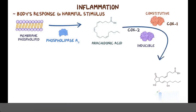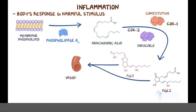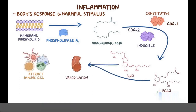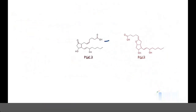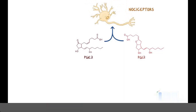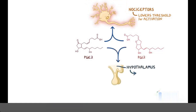Both enzymes produce prostaglandin E2 and prostacyclin, which cause vasodilation and attract different immune cells to the area. They also act on neurons that detect pain, called nociceptors, and make them more sensitive to stimuli by lowering their threshold for activation. Finally, they stimulate the hypothalamus to increase body temperature, causing fever.